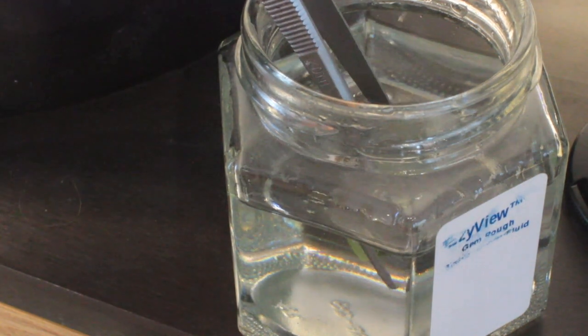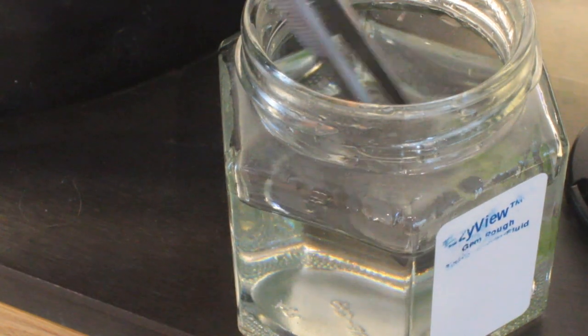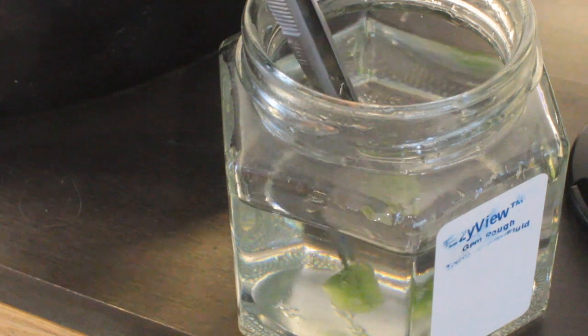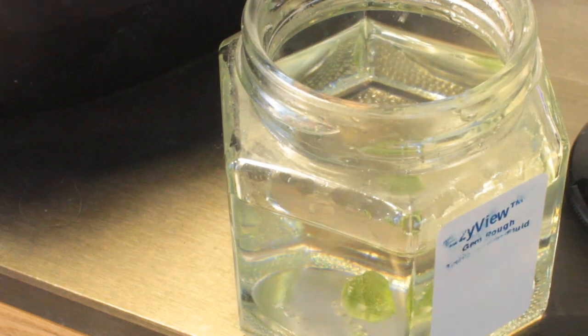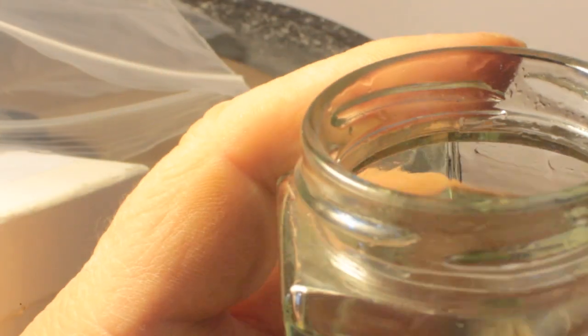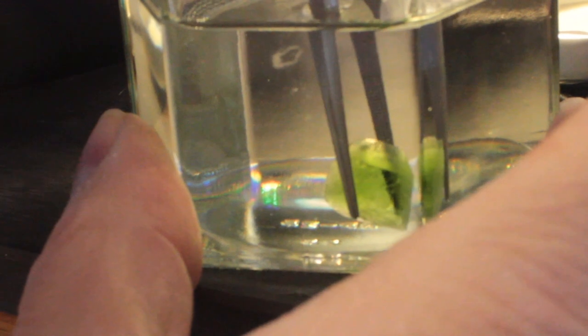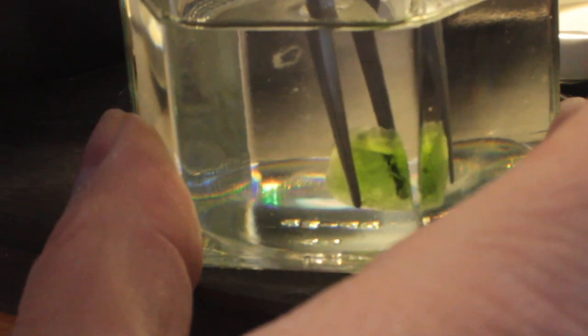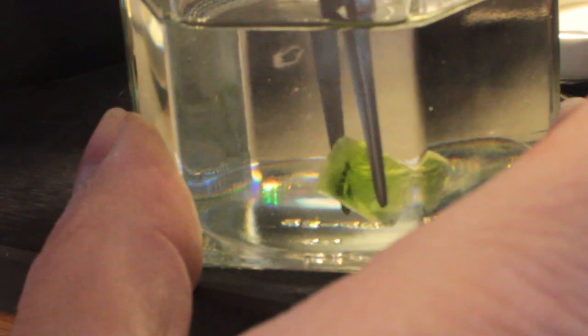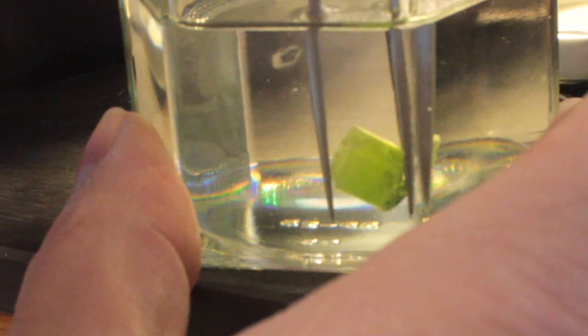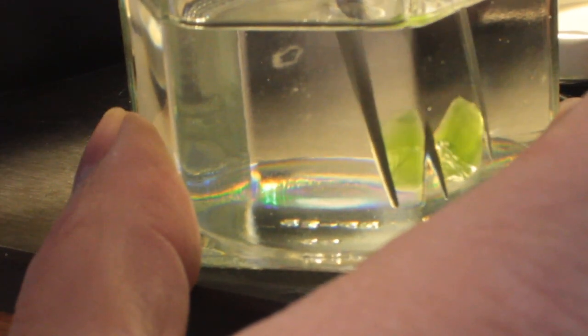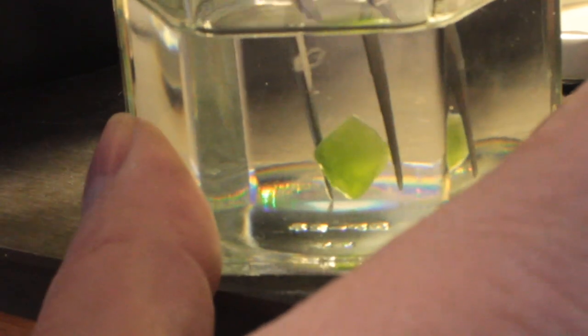I examined this peridot from Pakistan with refractive liquid. Even though the refractive index of peridot is not exactly the same as refractive liquid, it is very close with peridot at between 1.65 and 1.703 and refractive liquid at 1.567. I can see because of the refractive liquid, this stone is clean. Most importantly, I don't see any of those nasty little lily pad inclusions that peridot is famous for.